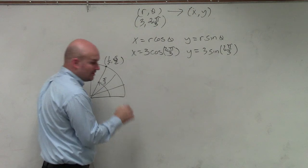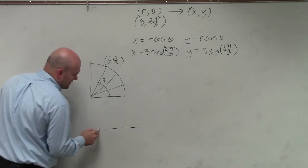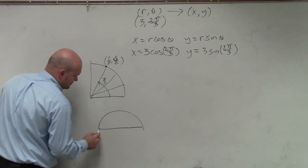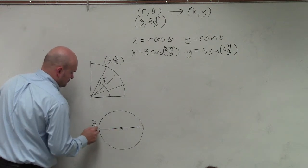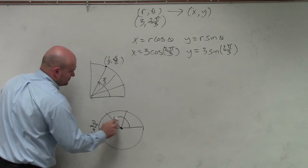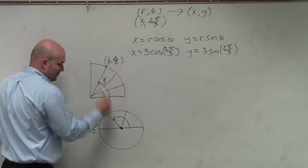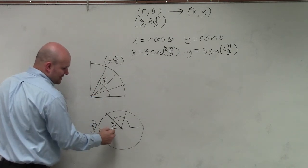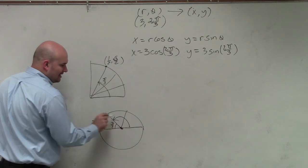But we're not at pi over 3. We're at 2 pi over 3. So where's 2 pi over 3? Well, 2 pi over 3 is right here. It's the exact same point, because that's pi over 3. The reference angles are exactly the same. But it's over here.